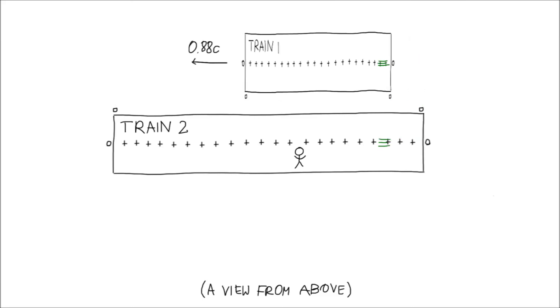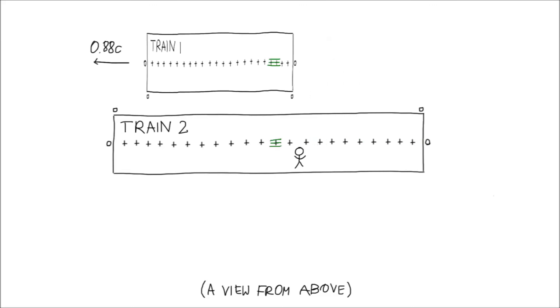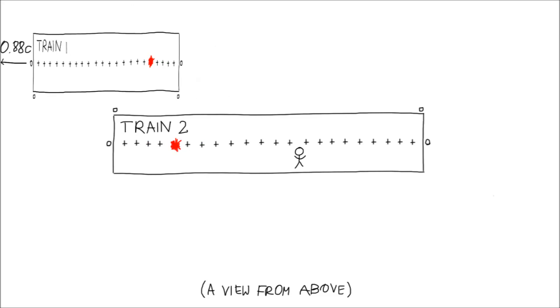Then, some time passed, the other ends of trains met, and the rear light was emitted. So the other train must be shorter.